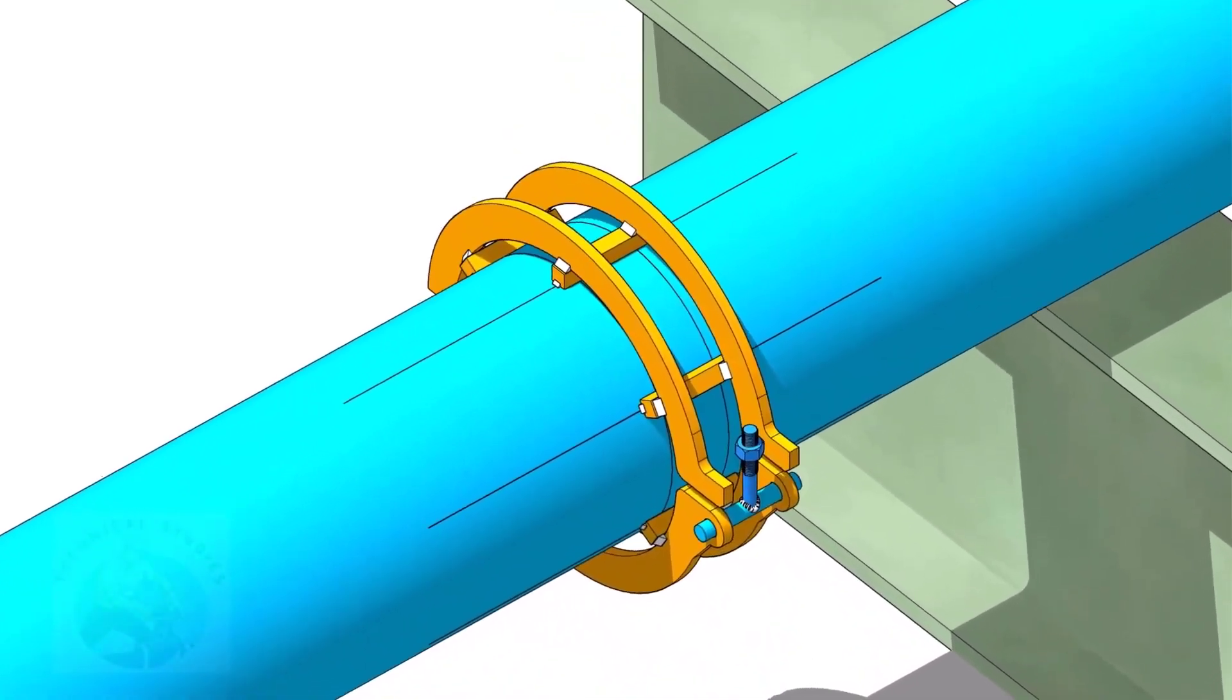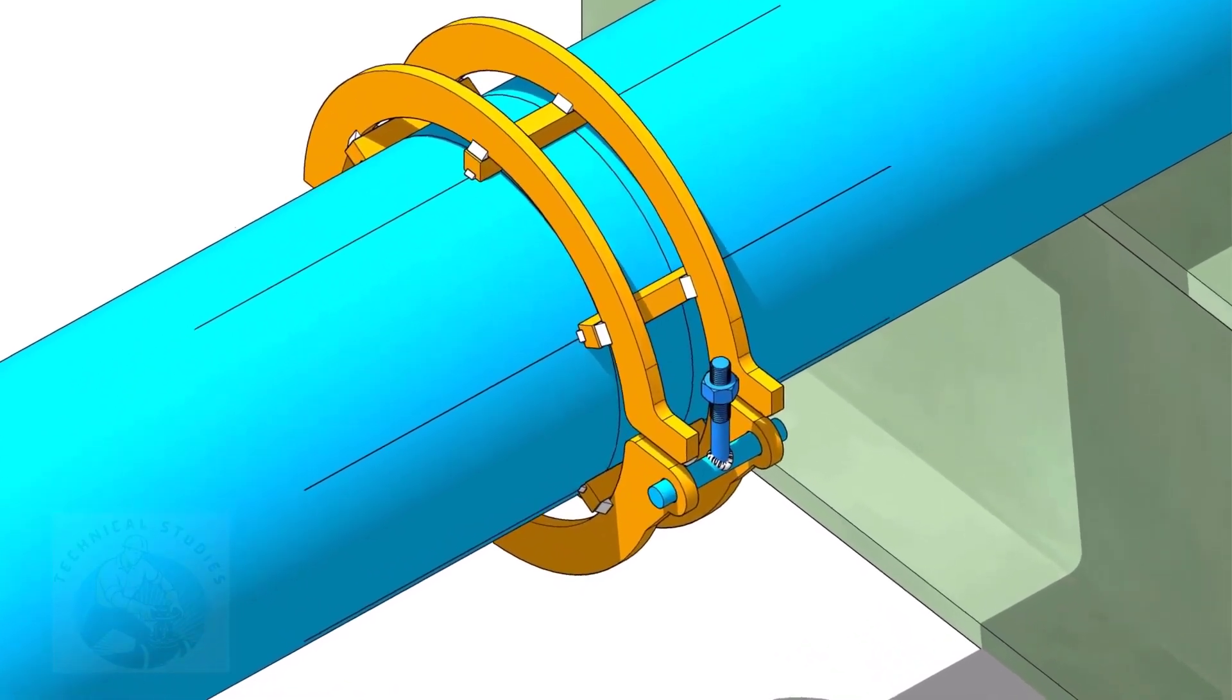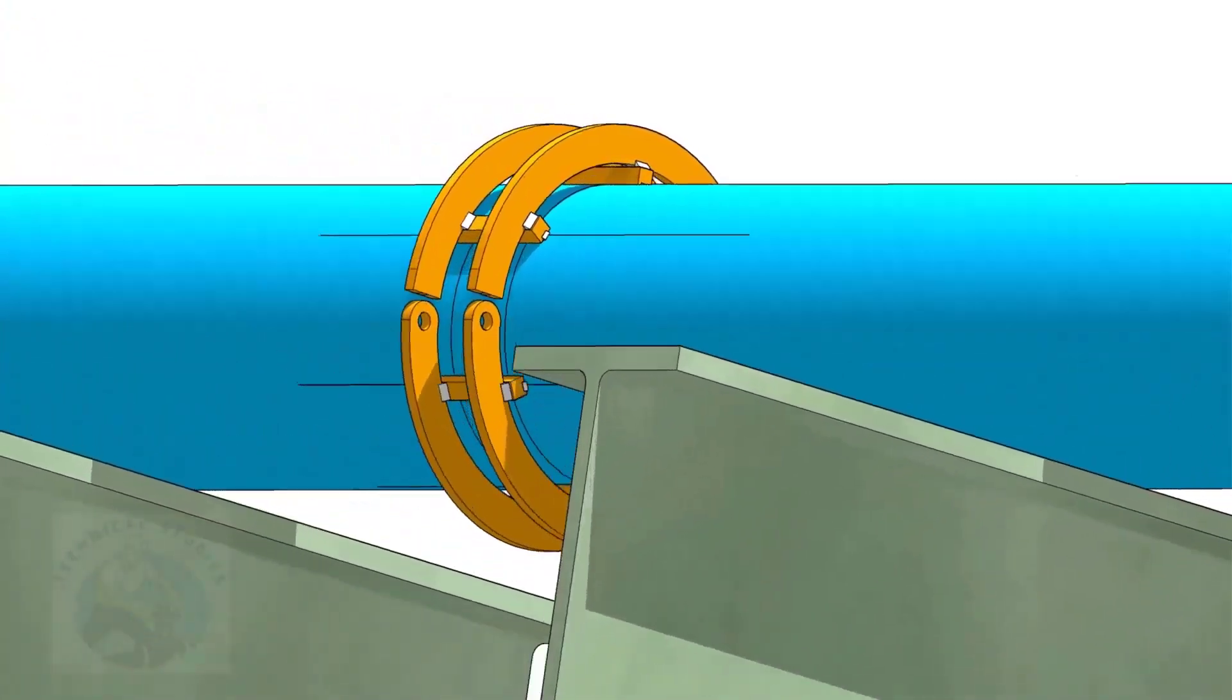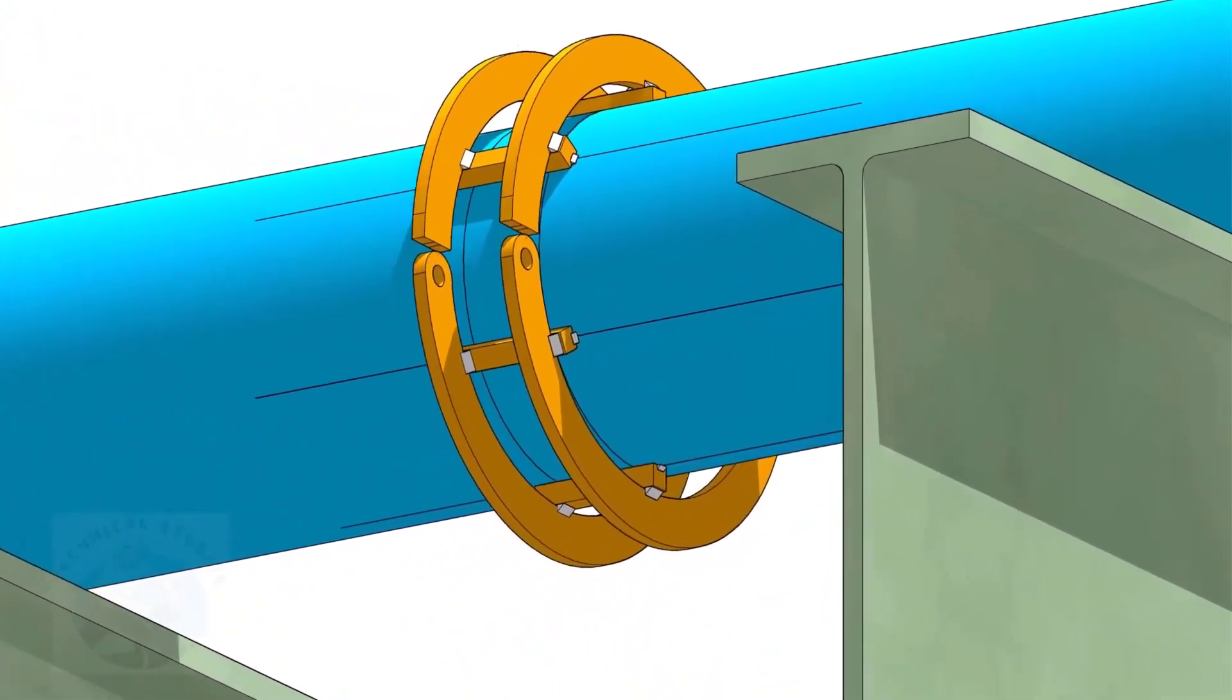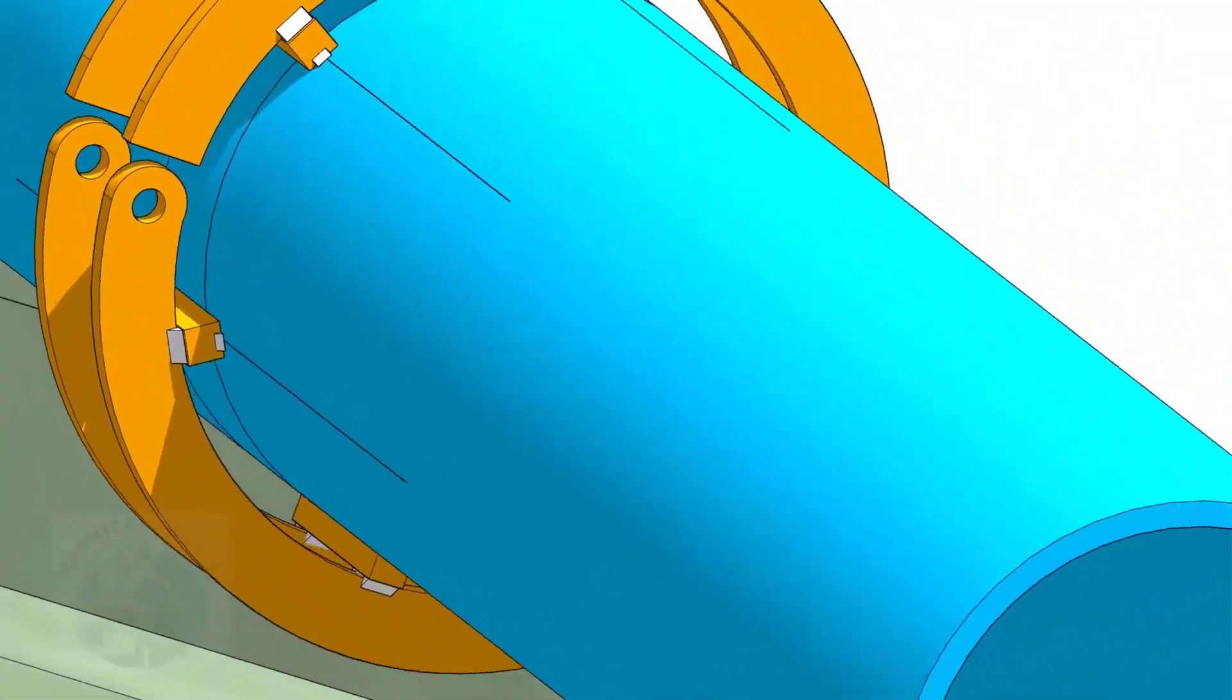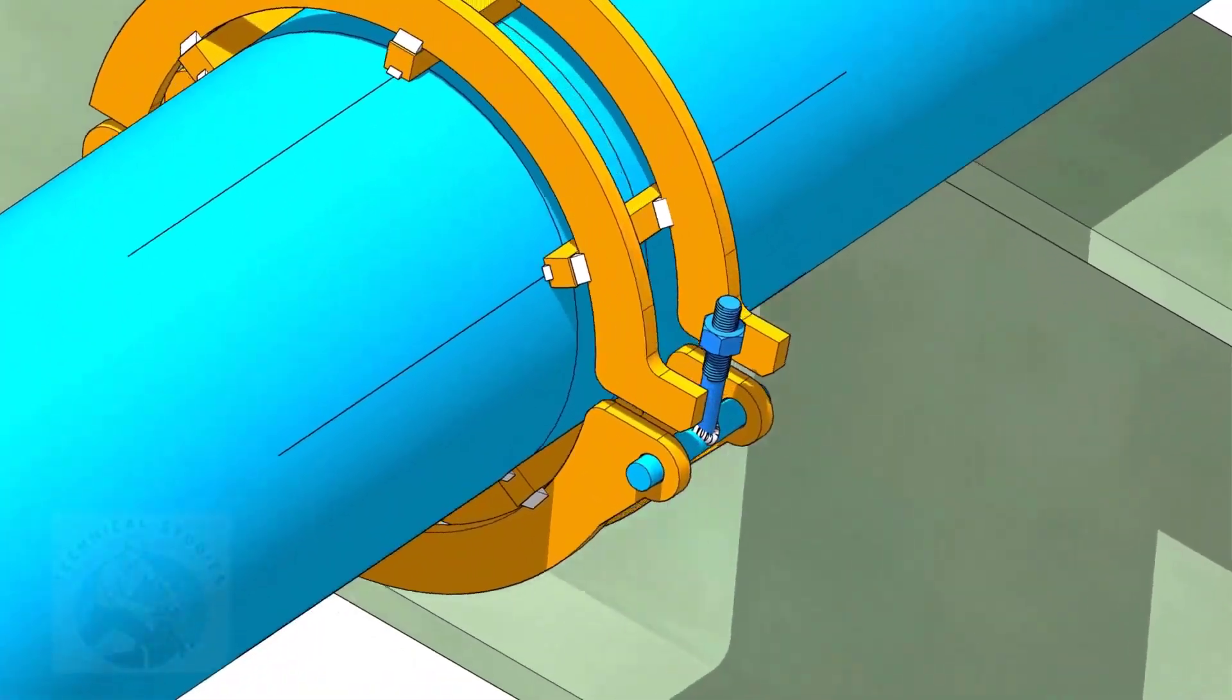Tack weld the bottom rings also. Put the lock bolt before tack welding these rings. First, put the bolt and the hinge plates, and tack weld the hinge plates with the top rings.